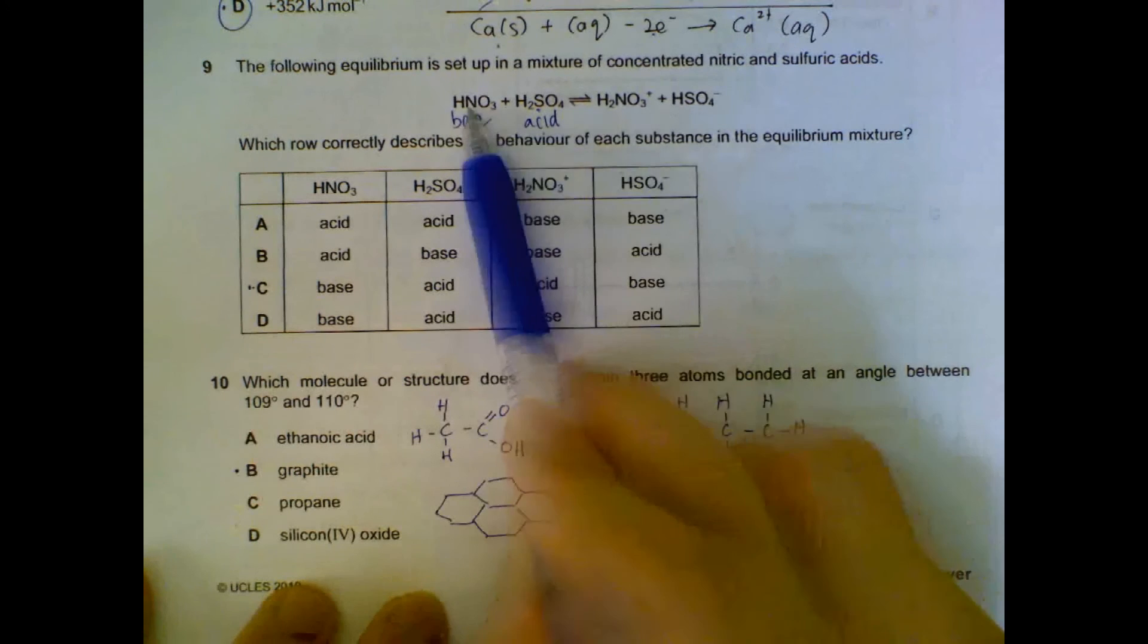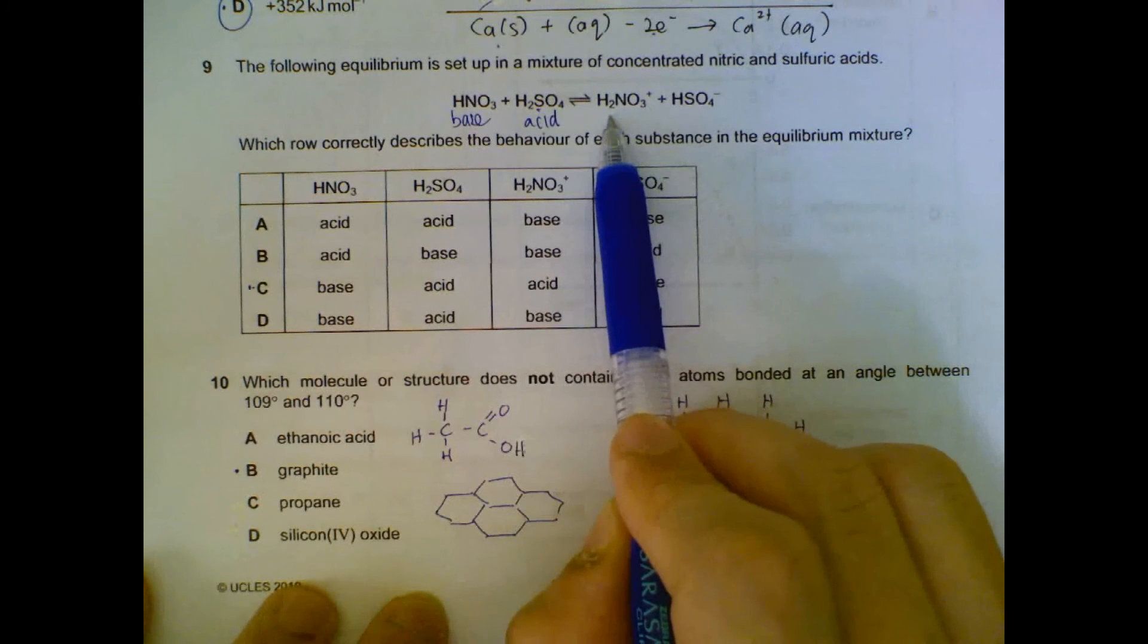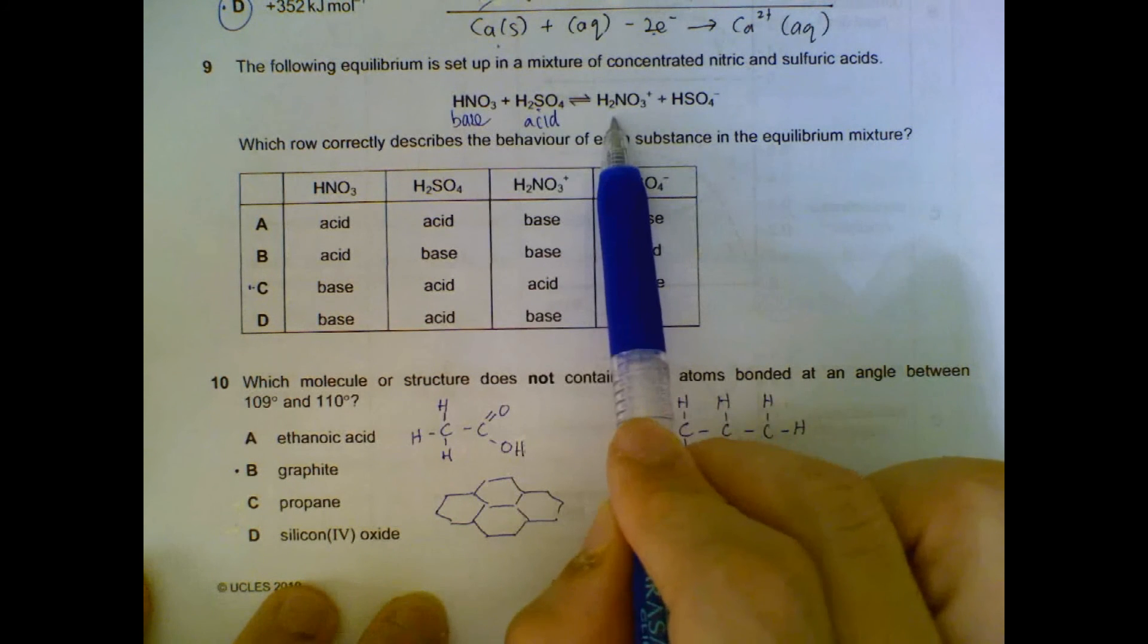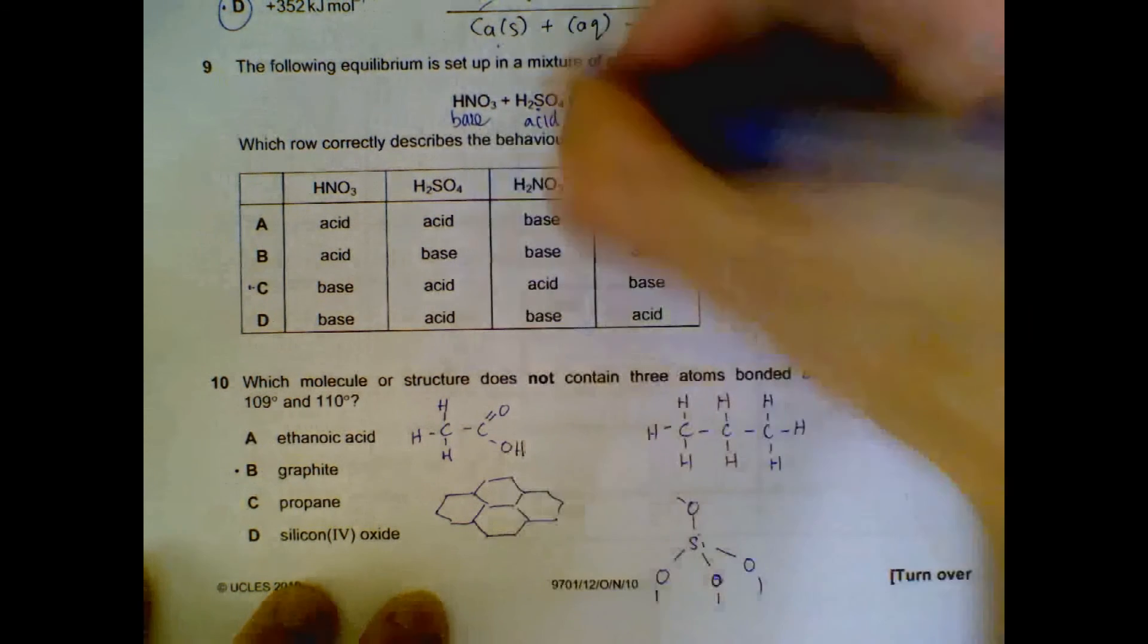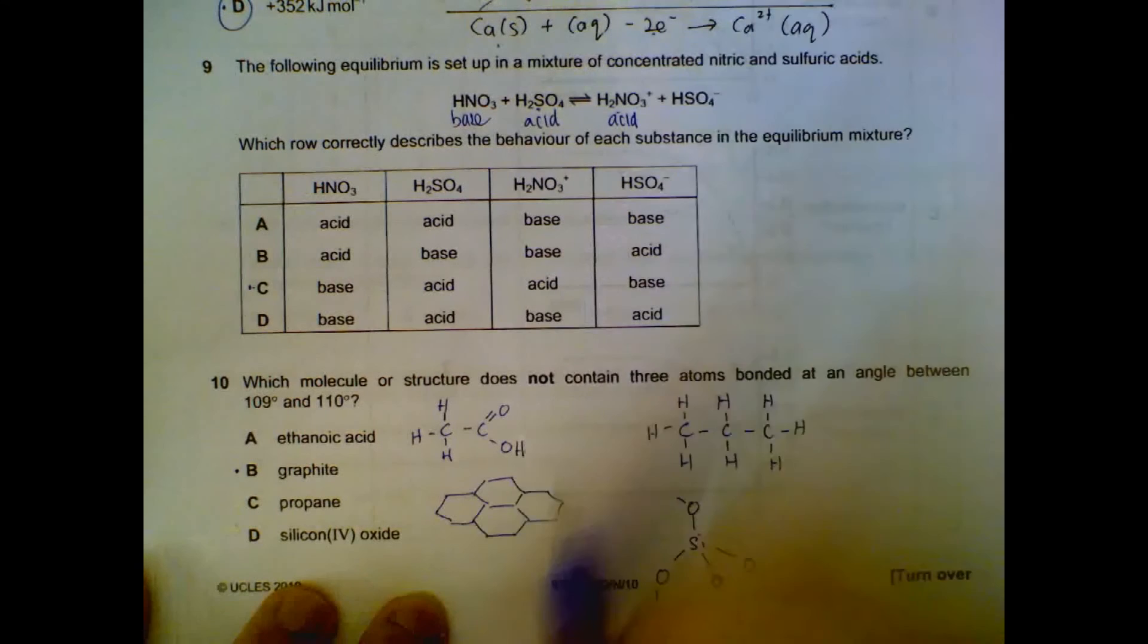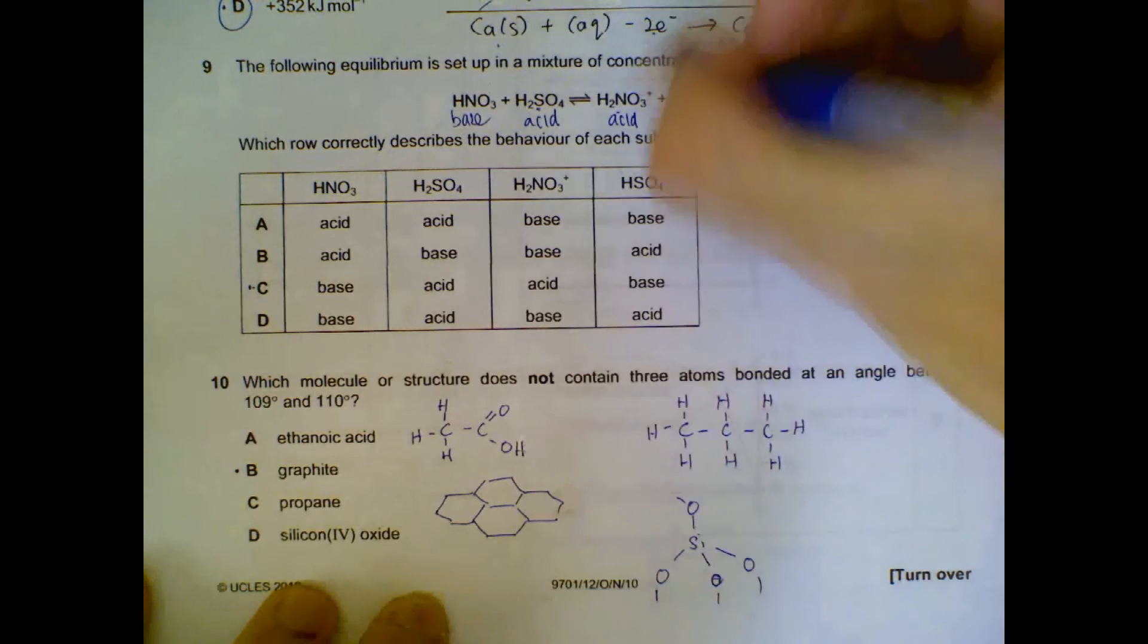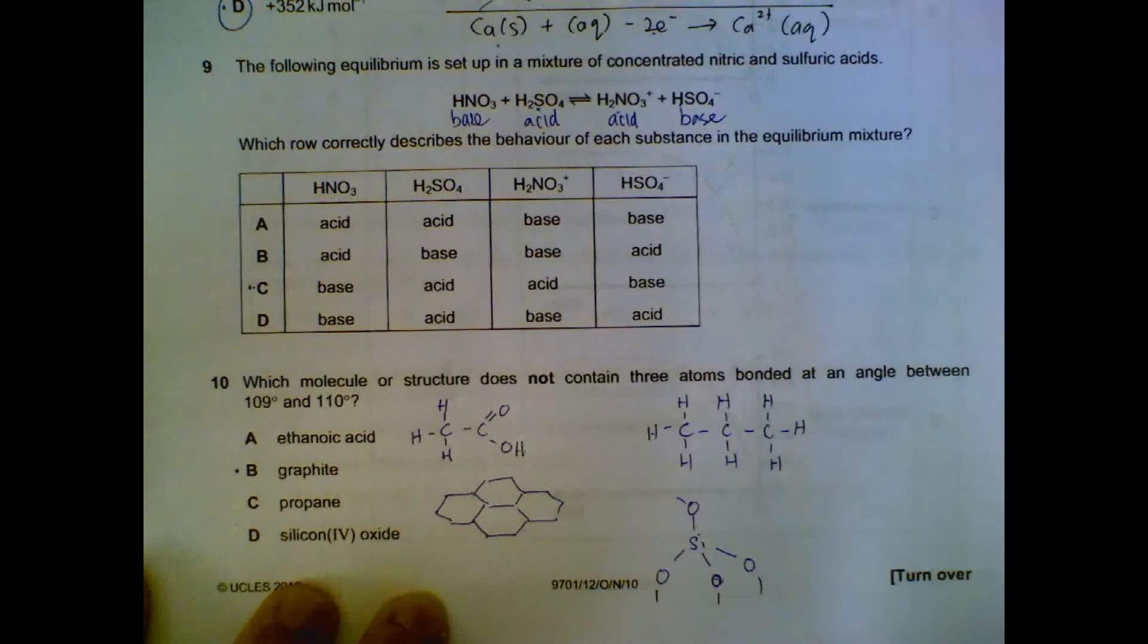The reverse: H2NO3+ to go backwards it has to lose a proton, so now it's behaving like an acid. And HSO4- become H2SO4, it has to gain a proton, that's when it behaves like a base.